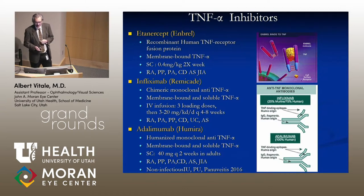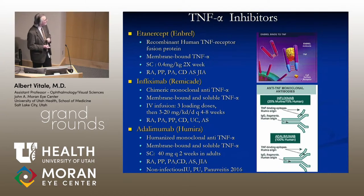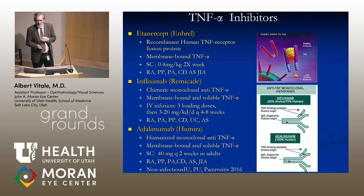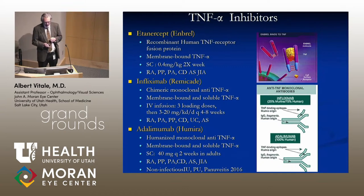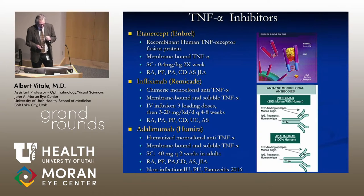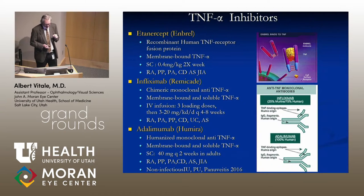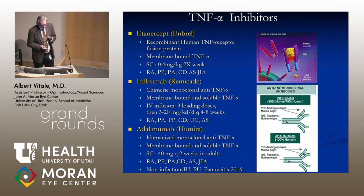The TNF inhibitors include etanercept, infliximab, and adalimumab. Etanercept is great for arthritis but is not useful in patients with iridocyclitis. Infliximab is a chimeric monoclonal antibody — a mouse-human combination — and adalimumab is a humanized monoclonal antibody that can be administered subcutaneously, whereas infliximab must be administered intravenously. Both bind membrane-bound and soluble TNF-alpha.